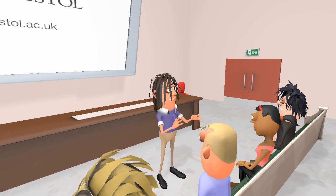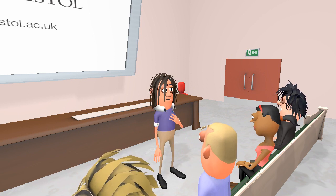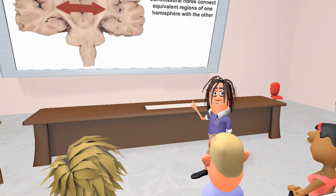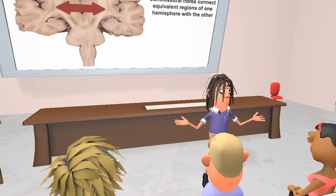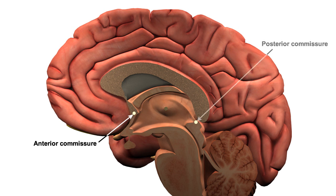The fibre tracts can be divided into two main types: commissural and associational. Commissural fibres connect equivalent regions between the two hemispheres of the brain. There are a number of commissural bundles. The anterior commissure connects the right and left olfactory regions of the brain, as well as the parahippocampal gyri, while the posterior commissure conveys fibres from the visual nuclei in the brain stem.